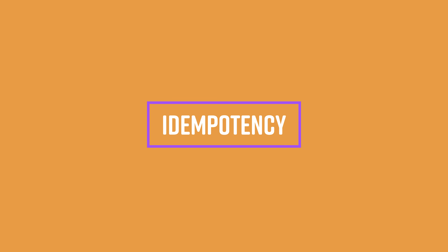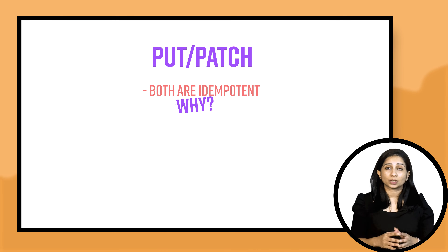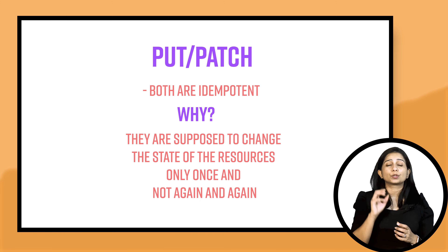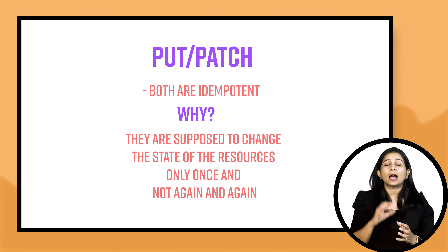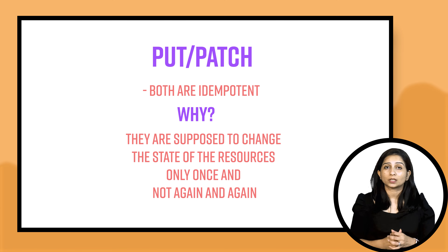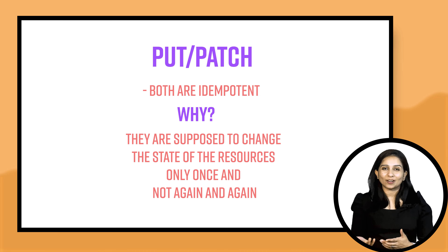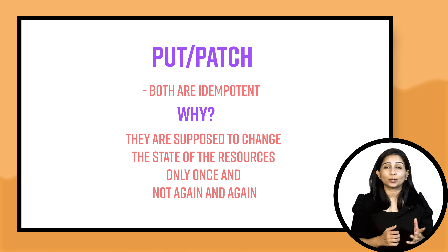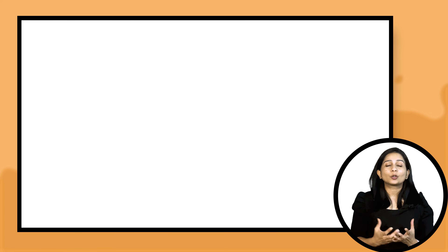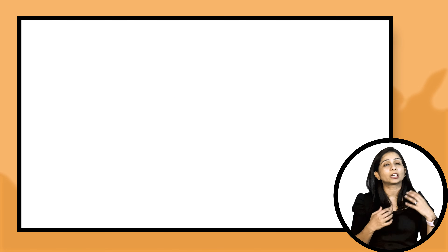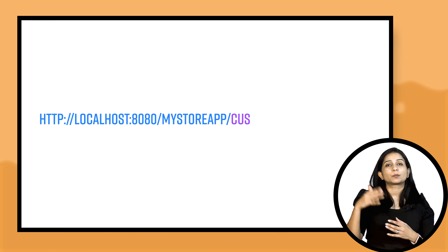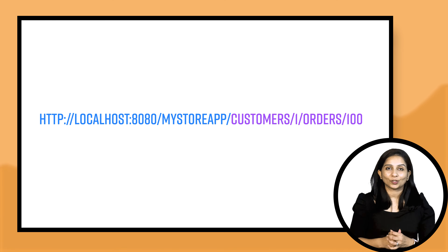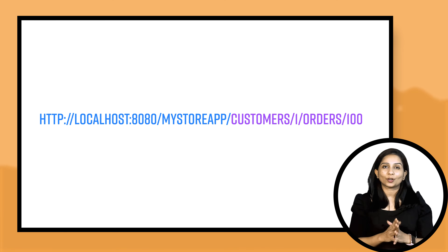Talking about idempotency, both PUT and PATCH requests are supposed to be idempotent. Once you update a resource using PUT, if you send the same request a second time, the server state is not going to change. The property of idempotency means your request will not change the state of the server no matter how many times you send it — this stands true for PUT, PATCH, and GET as well. The only method that should not be idempotent is POST. Similarly, just as we created and fetched orders for a customer, we can also update orders for a customer using customer/1/orders/{order_id}.